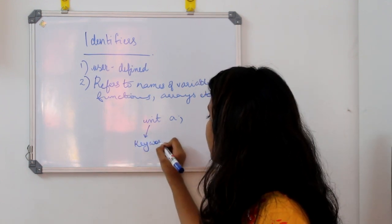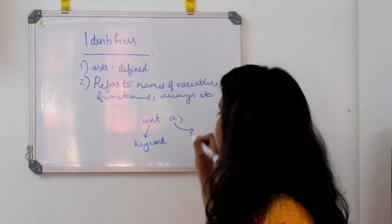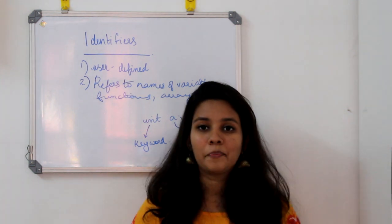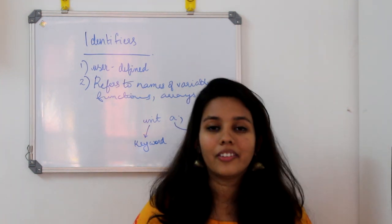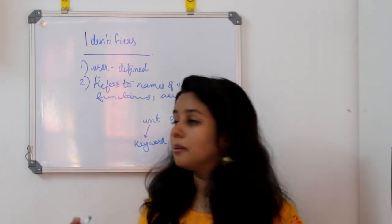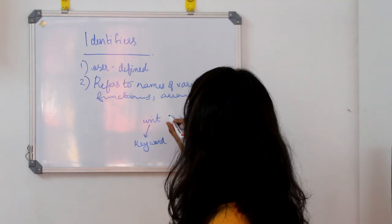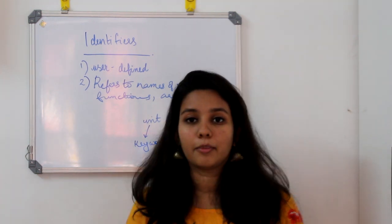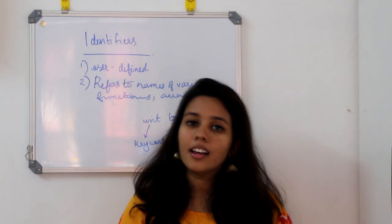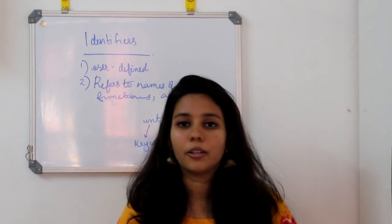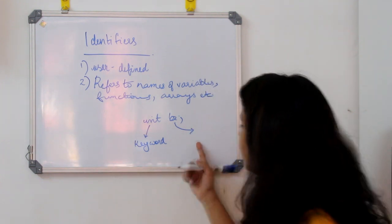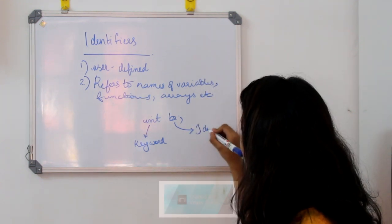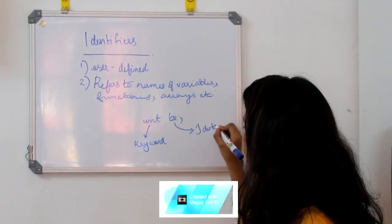What it says is user-defined. If we have A, B, or C — we can also use this. This is an identifier.